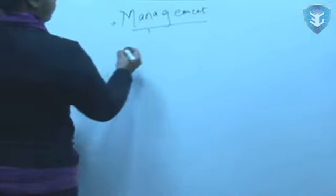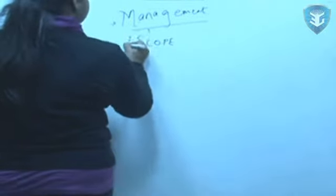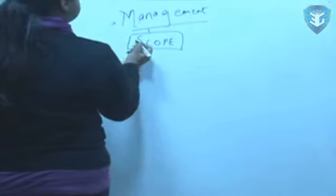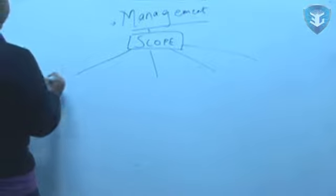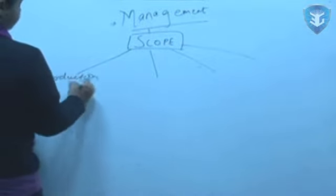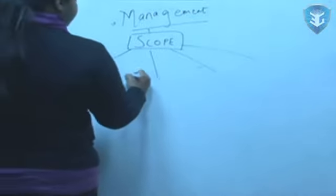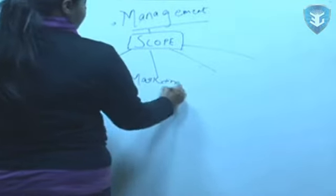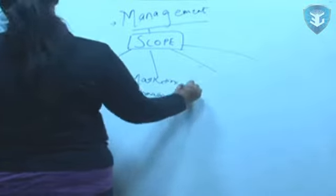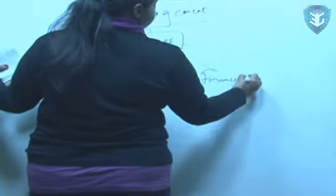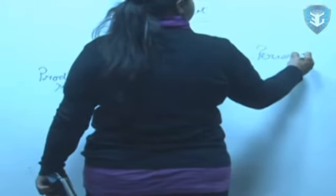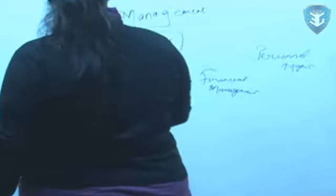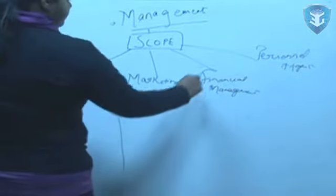After getting an idea of the meaning as well as nature of management, let us understand what is the scope of management. Scope of anything is the boundary till which the particular concept is applicable. Scope can be further categorized into four main heads: production management, marketing management, financial management and personal management.